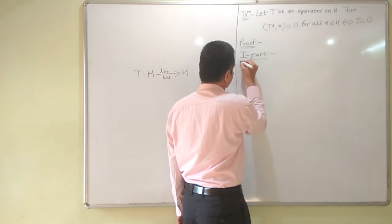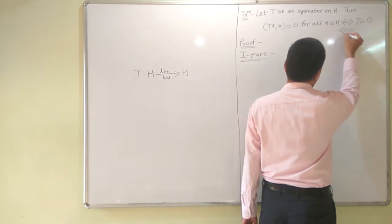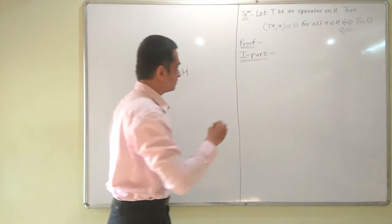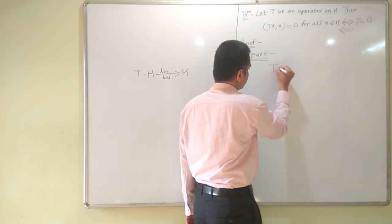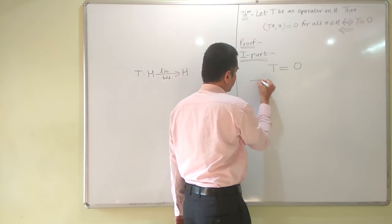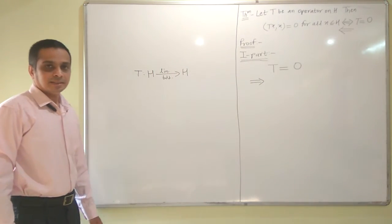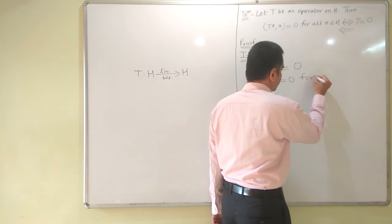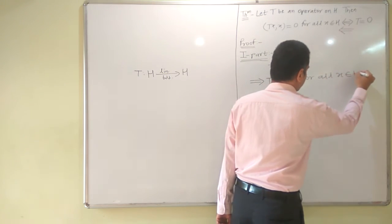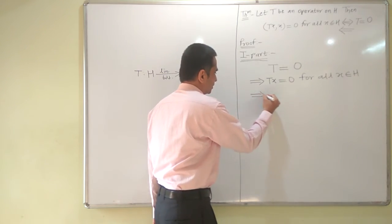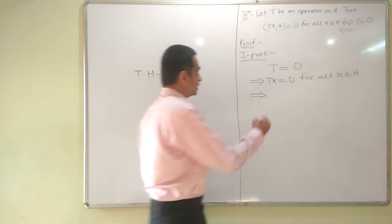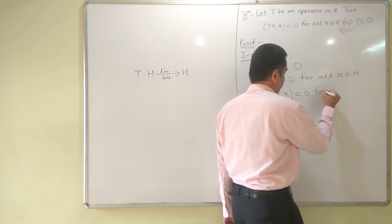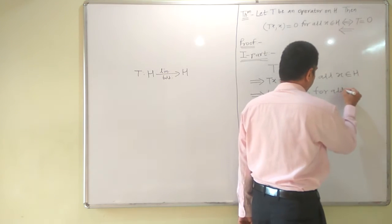In the first part, we are going to prove this way implication: if T is equal to 0, then ⟨Tx, x⟩ is equal to 0. Consider Tx equal to 0 for all x in H. This implies the inner product of Tx and x equals 0 for all x in H.